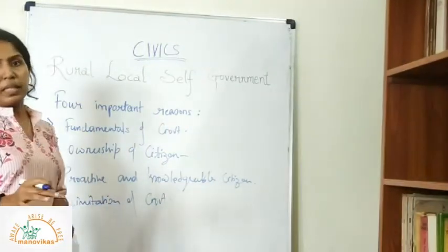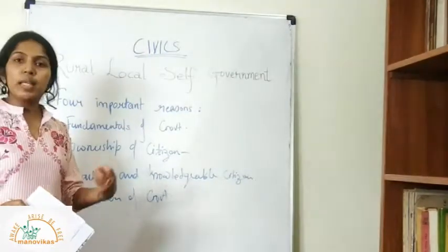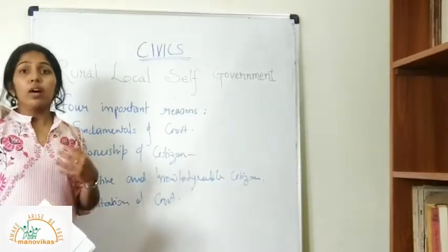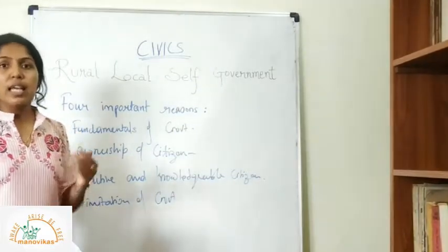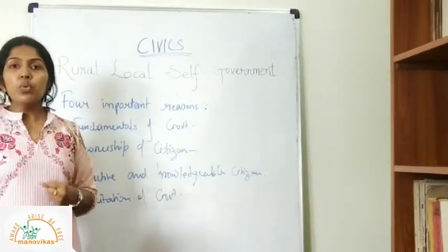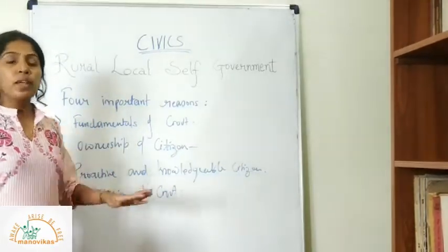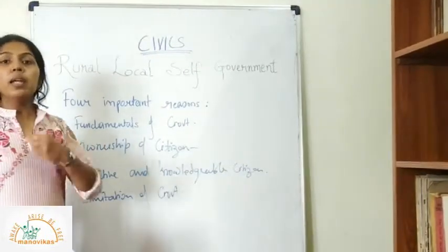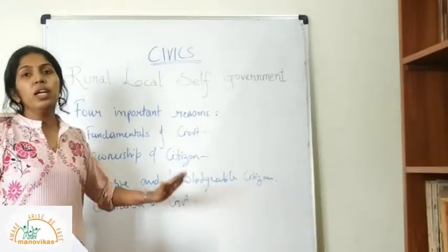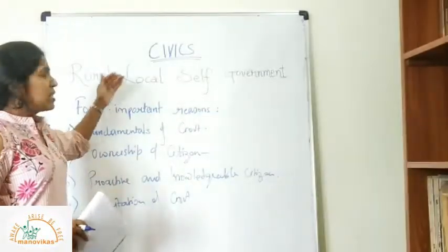The last point is the limitation of government. We know the government has a lot of rights, but with these rights come certain limitations. As responsible citizens, we need to know what the limitations of the government are. We too have certain rights — under certain sections or bills, we have rights which nobody, not even the government, can take away from us. Therefore we need to know the limitations of the government.